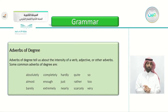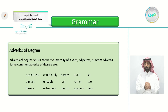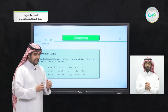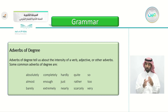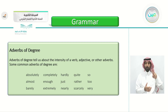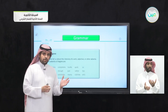Today's grammar lesson is adverbs of degree. Adverbs of degree tell us about the intensity of a verb, adjective, or other adverbs. Some common adverbs of degree are: absolutely, almost, barely, completely, enough, extremely, hardly, just, nearly, quite, rather, scarcely, so, too, and very. The adverbs of degree show the intensity — for example, 'this house is big' uses the adjective 'big,' but when you want to intensify it, you say 'the house is very big' or 'the house is too big.'